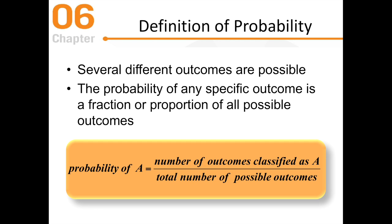There are always several different outcomes that are possible. If there was only one outcome, the probability would be 100%. The probability of any specific outcome is a fraction or proportion of all the different possible outcomes. For example, you could have red, blonde, brown, or gray hair — four possible outcomes. To find the probability of red hair, you take the number of outcomes classified as red hair and divide it by the total number of possible outcomes — four hair colors — so a 25% chance.